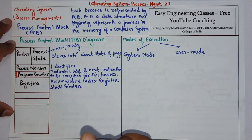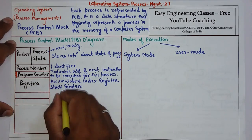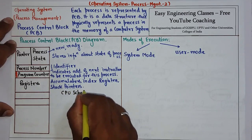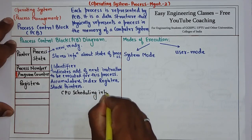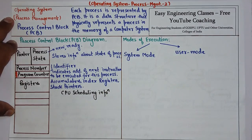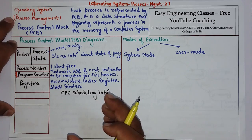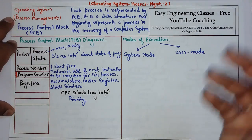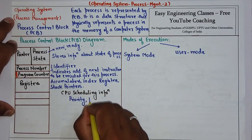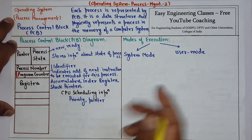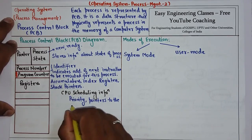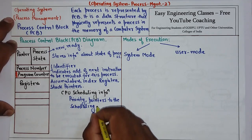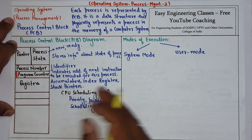One important piece of information stored in the CPU registers is CPU scheduling information. CPU scheduling information includes the priority of the process, because it is important when deciding which process needs to be allocated to the CPU. It also includes pointers to the scheduling queues indicating at which location the process is currently residing, as well as any other scheduling parameters.